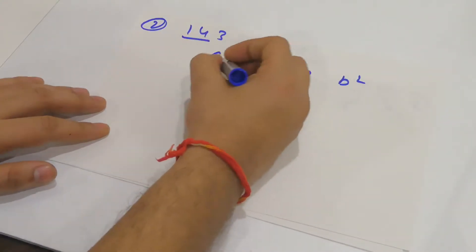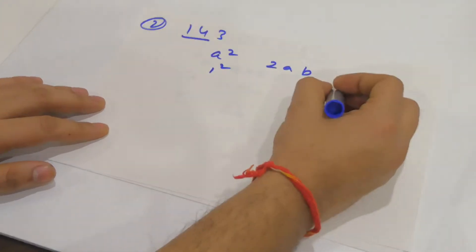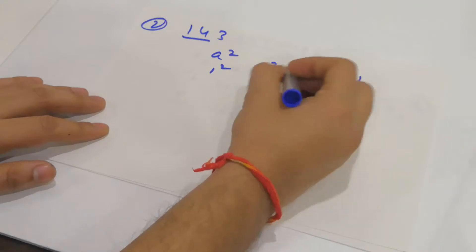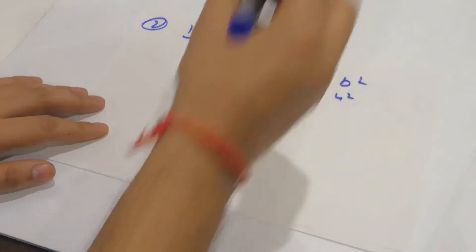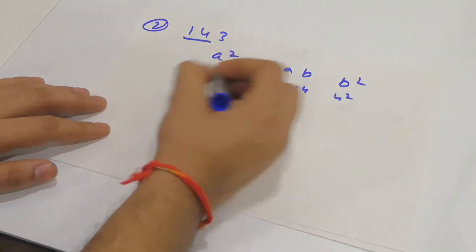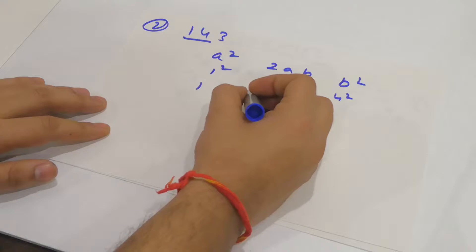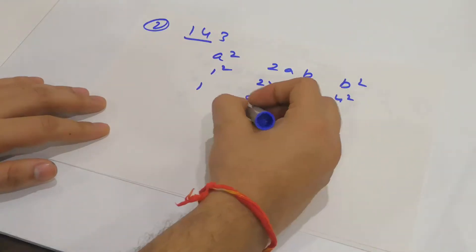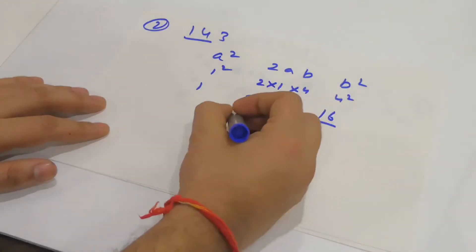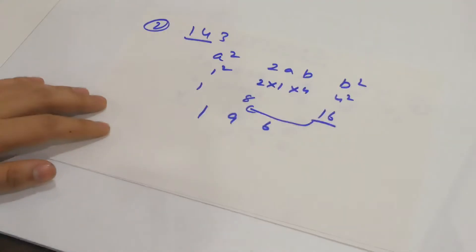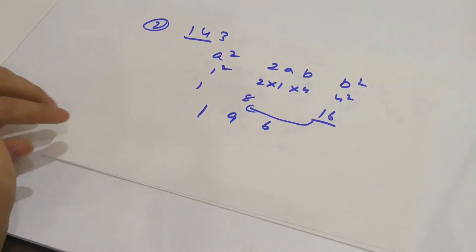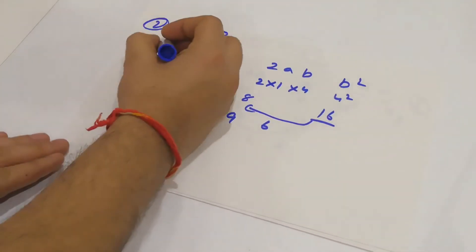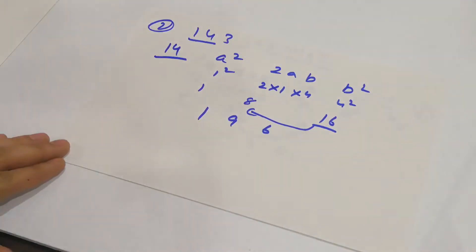Here A = 1 and B = 4. So A² = 1, B² = 16, and 2AB = 2 × 1 × 4 = 8. I'll carry the 1 from 16, so this becomes 196. So the square of 14 is 196.